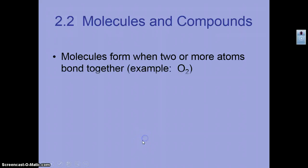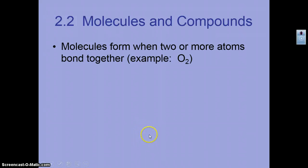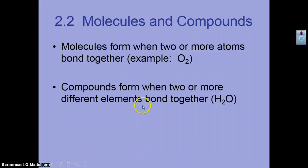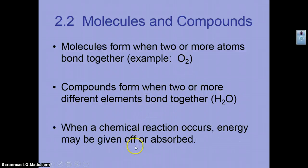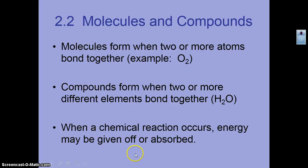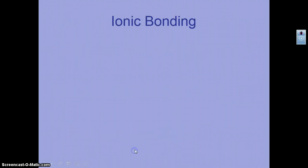Molecules and compounds: molecules are two or more atoms of the same type bonded together, such as oxygen gas. Compounds form when two or more different elements bond together, like water. When a chemical reaction occurs, it either gives off energy — exothermic — or absorbs energy — endothermic.